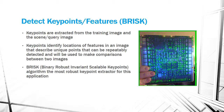After the 2D training images are created, the next step is to detect key points or features using BRISK. Key points are extracted from both the training image and the scene or query image. Key points identify locations of features that describe unique points which can be repeatably detected and will be used to make comparisons between two images. BRISK, or Binary Robust Invariant Scalable Key Points algorithm, is the most robust key point extractor for this application.